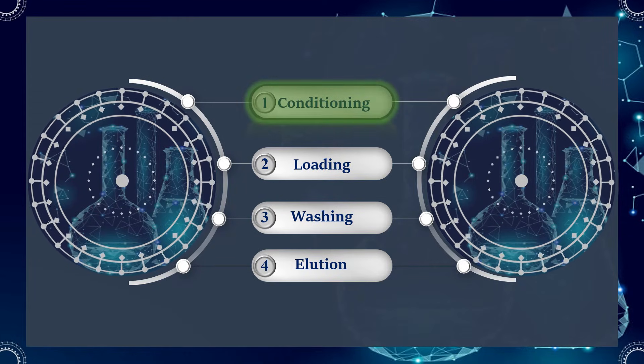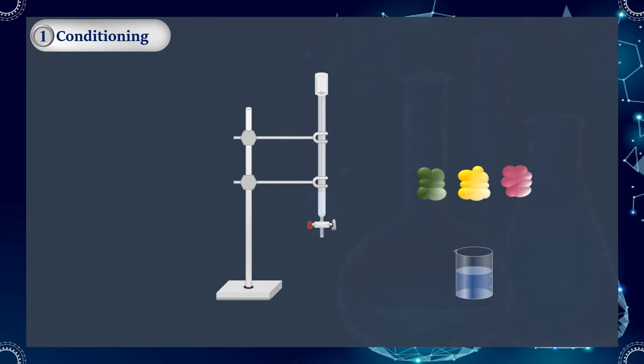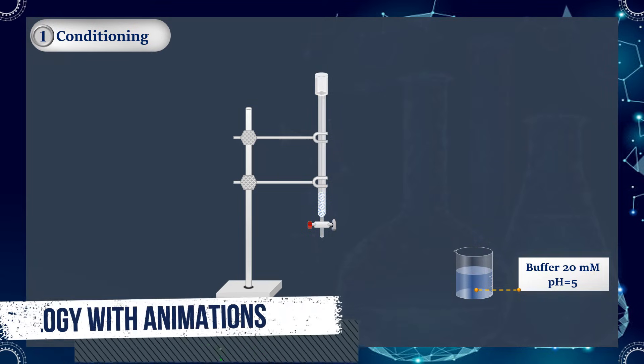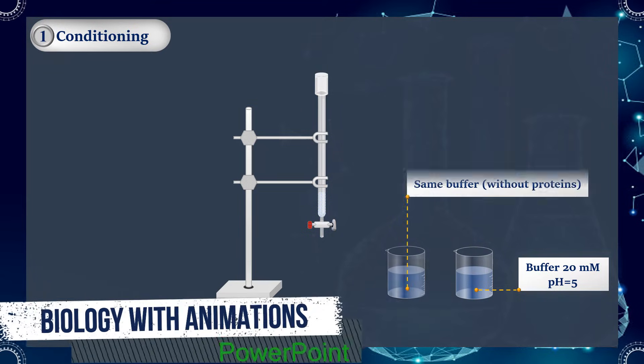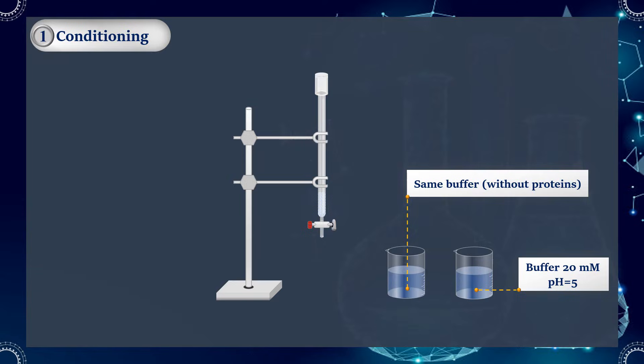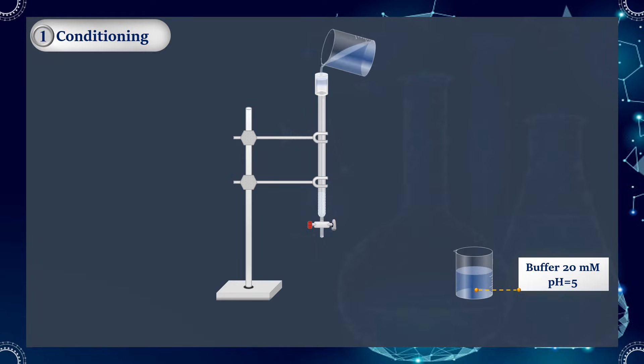The first step is the equilibration of the stationary phase to the desired start conditions. The pH and ionic strength of the sample buffer are selected to ensure that, when sample is loaded, proteins of interest bind to the medium, and as many impurities as possible do not bind. Therefore, the same buffer is used for the equilibration of the stationary phase.